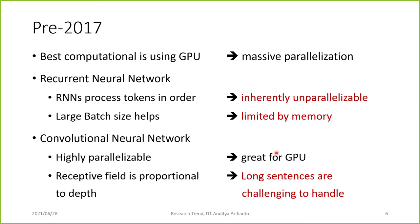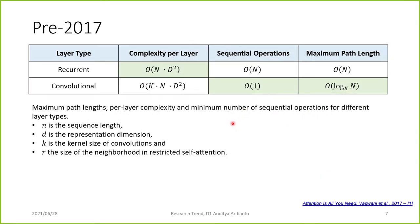With CNNs, the receptive field is proportional to the depth, so to process very long sequences — for example in text summarization — we need many layers, which is again limited by memory. The pre-2017 complexity for a recurrent neural network is O(n·d²), where n is sequence length and d is the hidden state size. For convolution, it's O(k·n·d²) where k is the kernel size. Complexity per layer is better with RNNs, but at inference CNNs are better since they process all tokens at once — O(1) parallel steps versus O(n) sequential steps for RNNs.